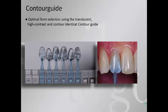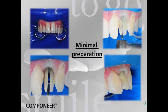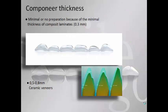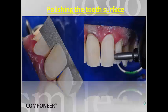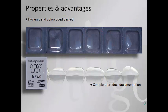Regarding operative guidelines: identical contour guides are chosen for optimal form selection of the cervical edge. A minimal preparation of 0.3 mm is performed, and a retraction cord is placed under the gingiva to expose the cervical finishing line. The Componeer thickness is 0.3 mm, compared to the ceramic veneer which is 0.5 to 0.8 mm. Polishing of the tooth is mandatory. The shells come in hygienic, color-coded packs with information on the back, which should be recorded in the patient's case sheet for future follow-up.